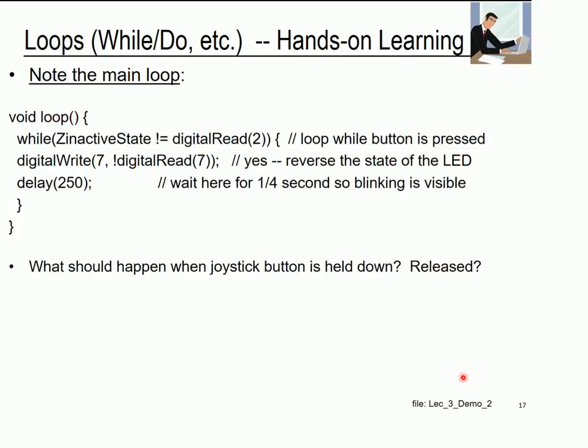Next thing we do is the main loop, which is pretty simple. This is where the while stuff is happening. We're going to loop while the button is pressed. Here's how we do that. We do a read of the switch and then we say, is it not equal to?